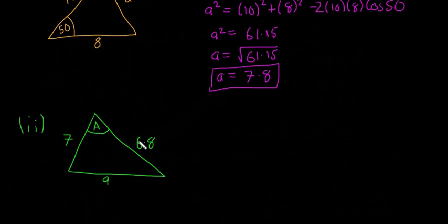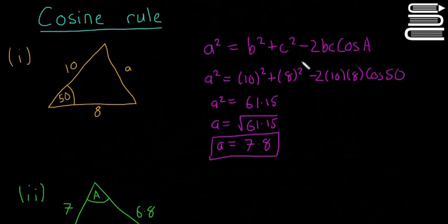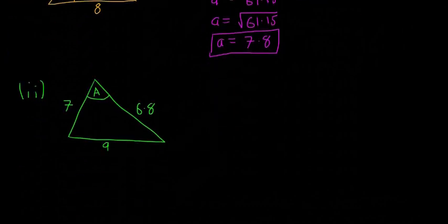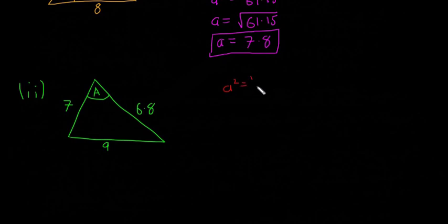So in this case we have the three sides, and we're looking for the angle A. So if you watched the last video you know that we're going to use the same formula, we're just going to rearrange it a little bit. So I'll write it out again. So it's going to be a² = b² + c² - 2bc cos A.